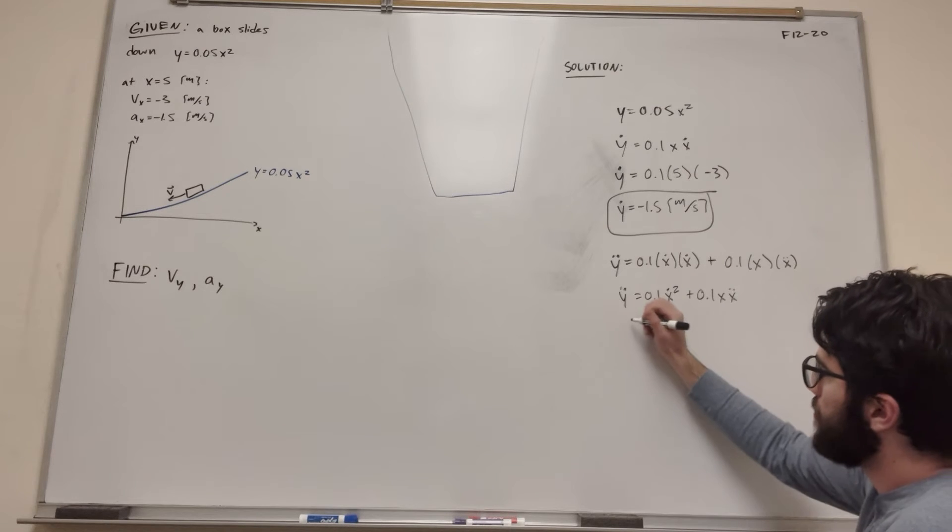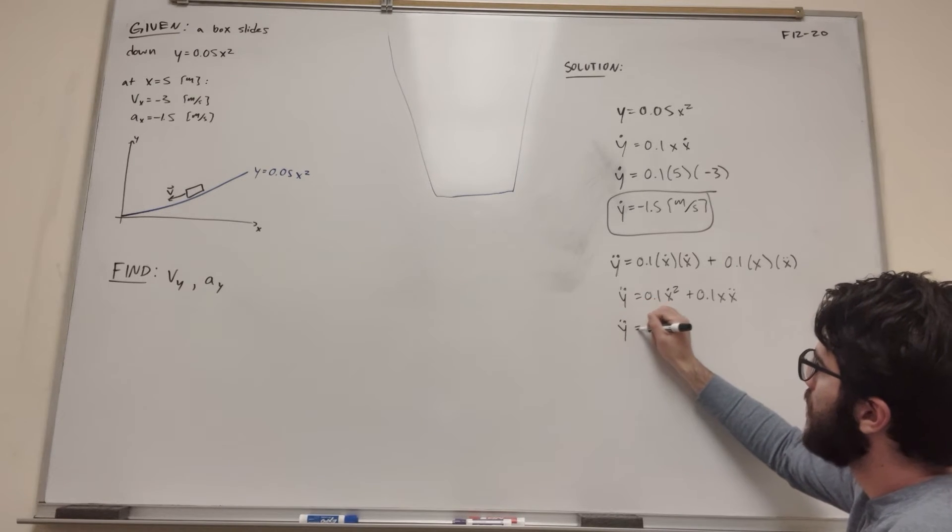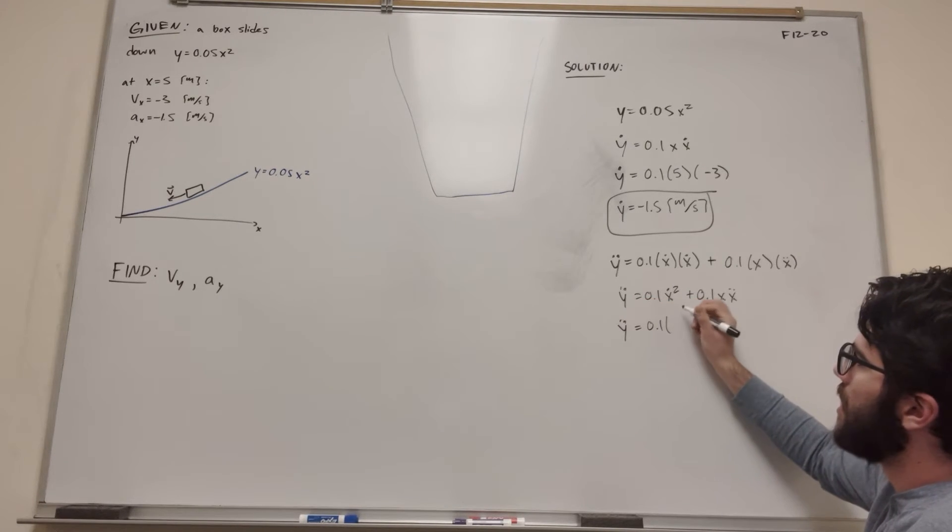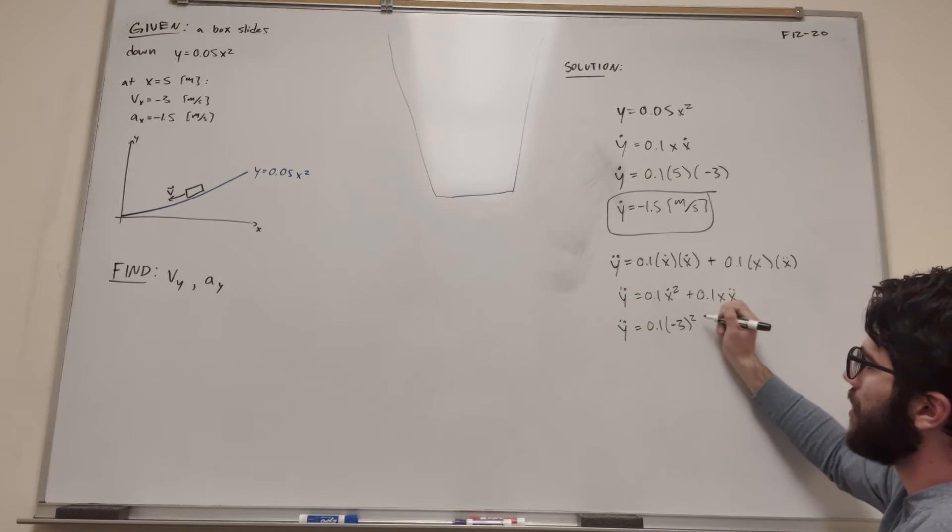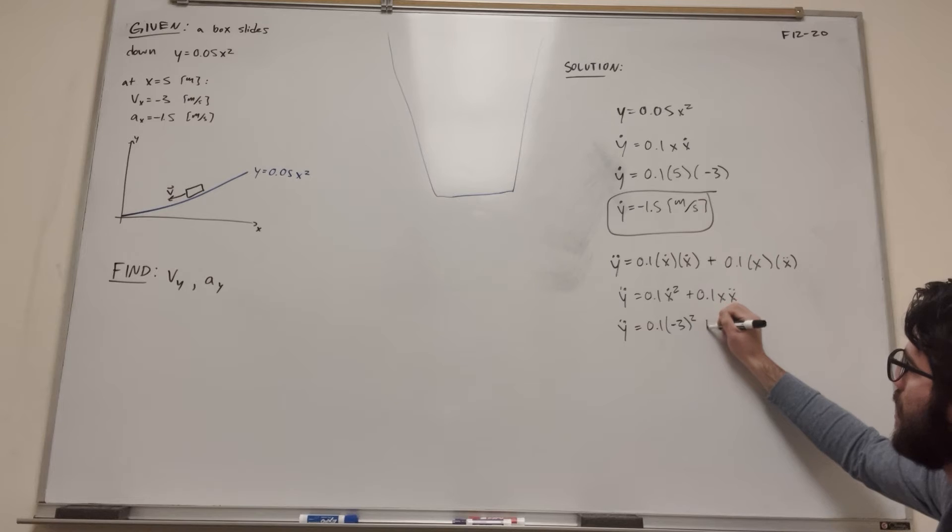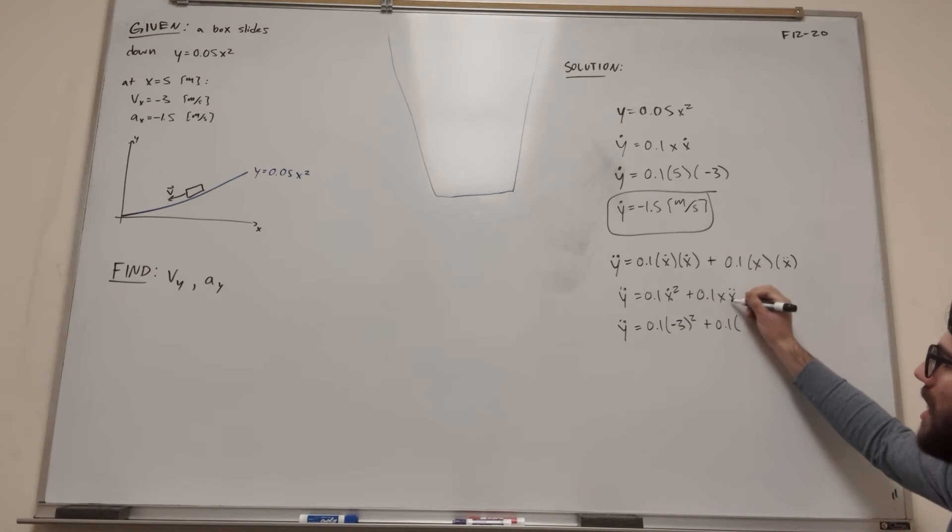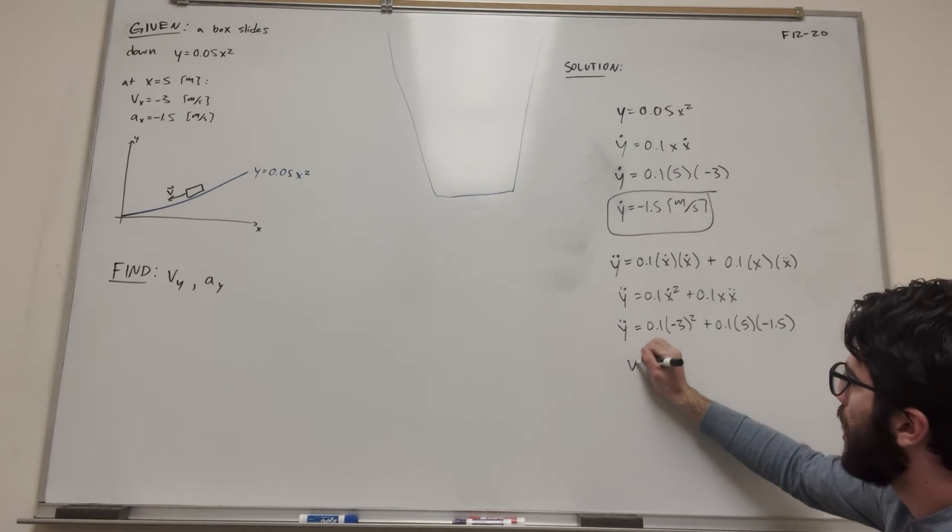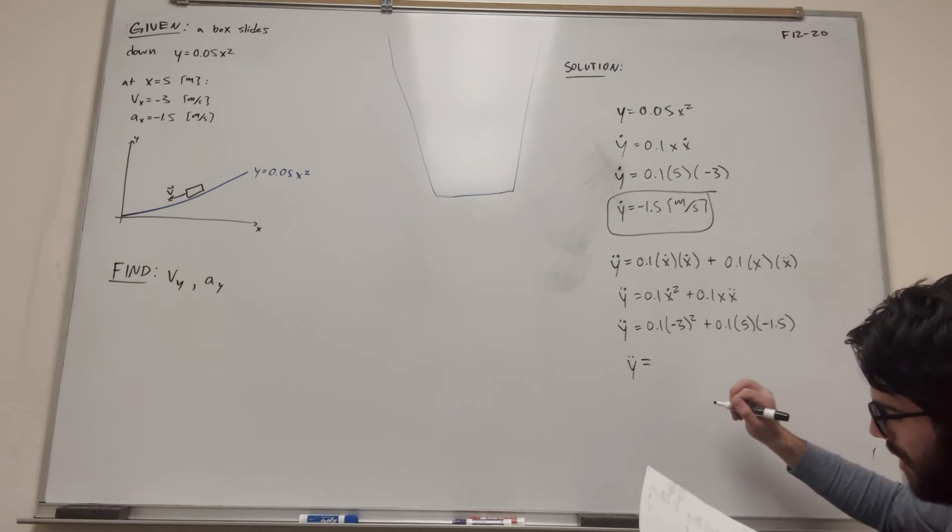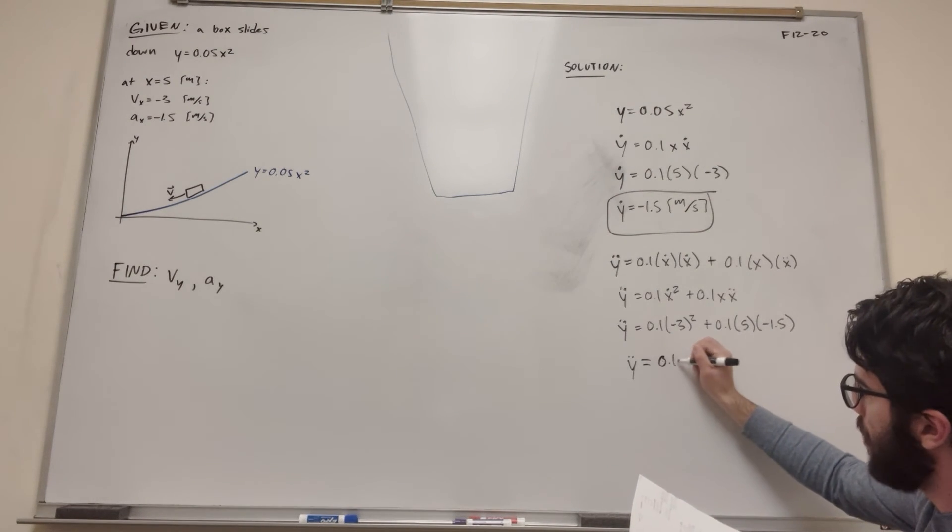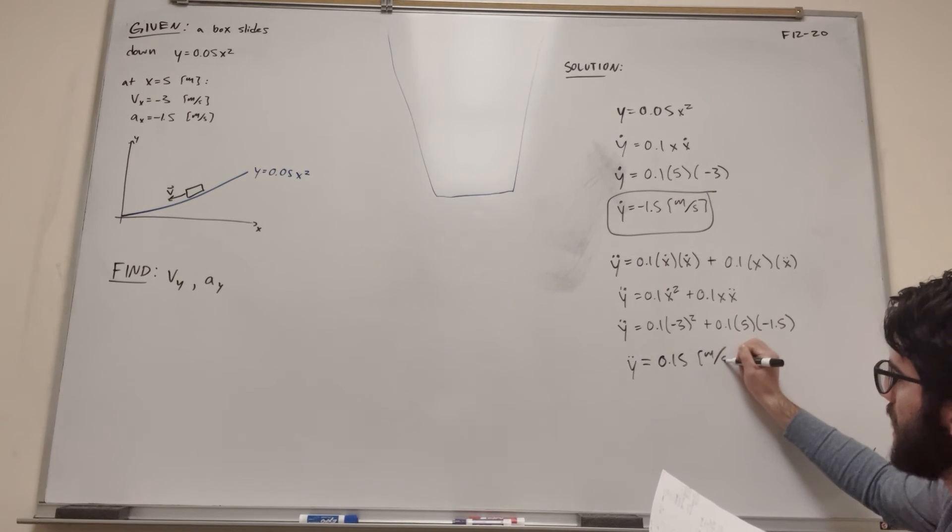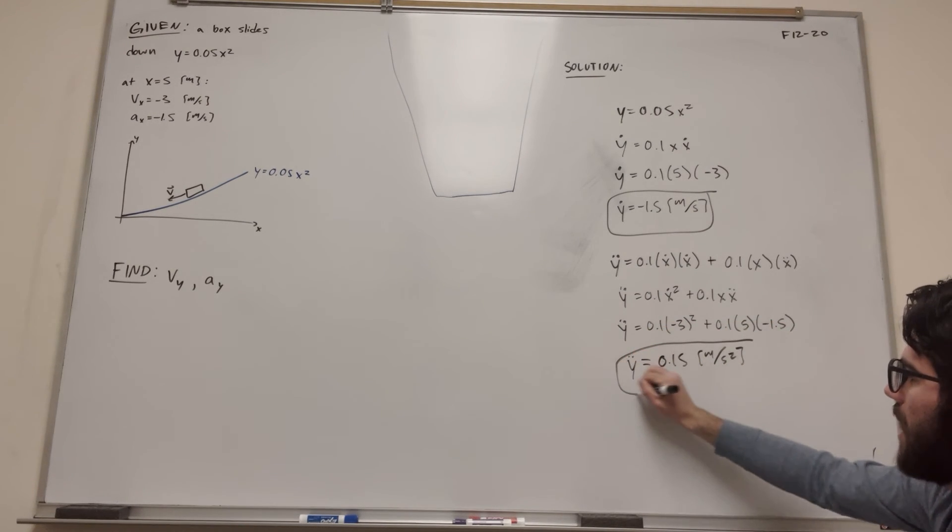So let's plug in our numbers again. y double dot is equal to 0.1. This x dot is equal to negative 3. So negative 3, but we have to square that, so it's going to become a positive 9 plus 0.1 x is 5 meters, and x double dot is negative 1.5, the acceleration. So y double dot is equal to, if you do the math on this, you get 0.15 meters per second squared, and that's our answer.